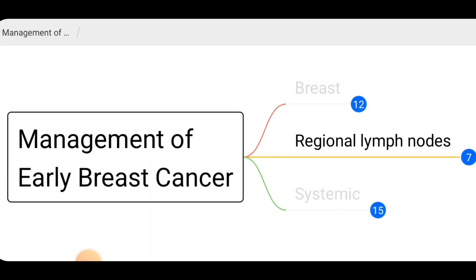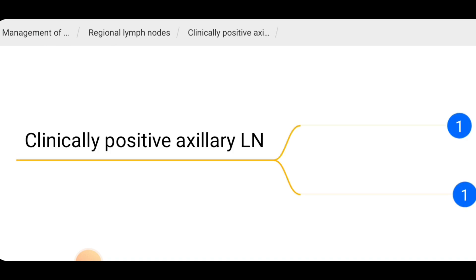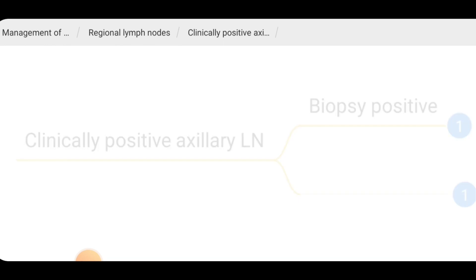Now let's move on to managing regional lymph nodes. This can be done based on whether or not there are clinically positive axillary lymph nodes. If there are palpable lymph nodes on clinical examination, a core biopsy can be performed. If the nodes are positive, we may proceed with axillary lymph node dissection.